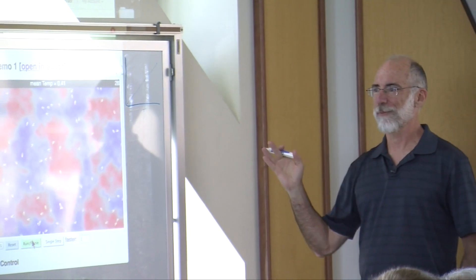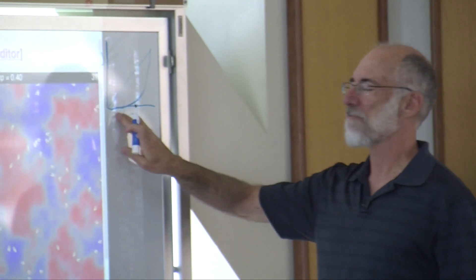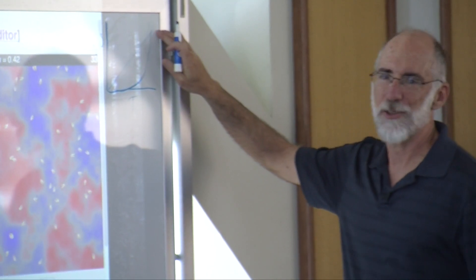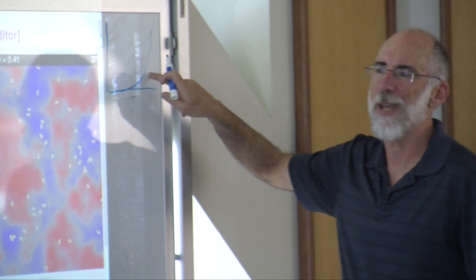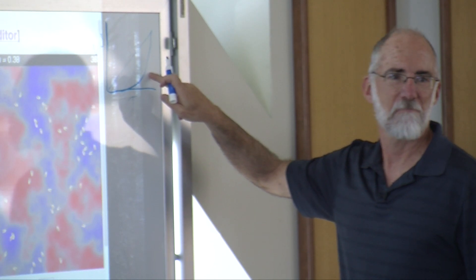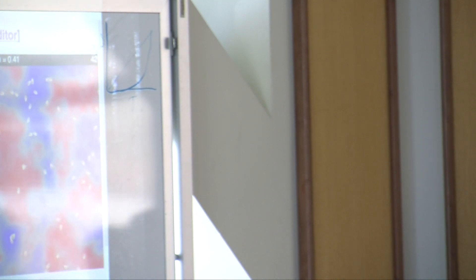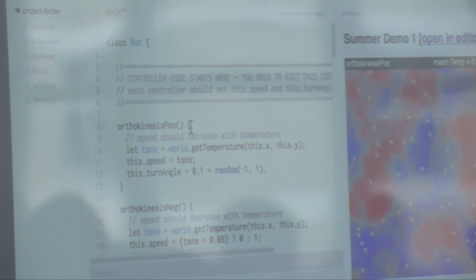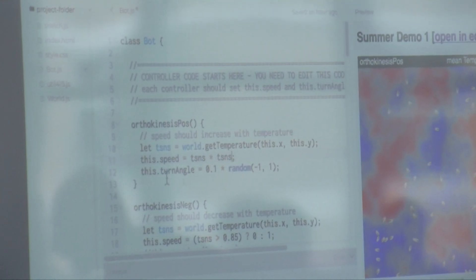If this is linear velocity equals t, what would this relationship be? Maybe t squared? Yeah, t squared would be something to try. So, we'll go back to... Here's our code. This is the temperature sense. I'll just multiply it. T sense times t sense. That makes it quadratic.